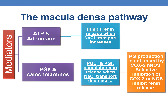The mediators that modulate the macula densa pathway are ATP, adenosine, prostaglandins and catecholamines. ATP and adenosine inhibit renin release when sodium chloride transport increases. Prostaglandins — especially PGE2 and PGI2 — and catecholamines stimulate renin release when sodium transport decreases.